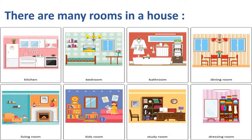The next one is living room. Whenever guests come to your house, they sit in the living room. In the living room, there is a TV, sofa, etc. Fifth is kids room.